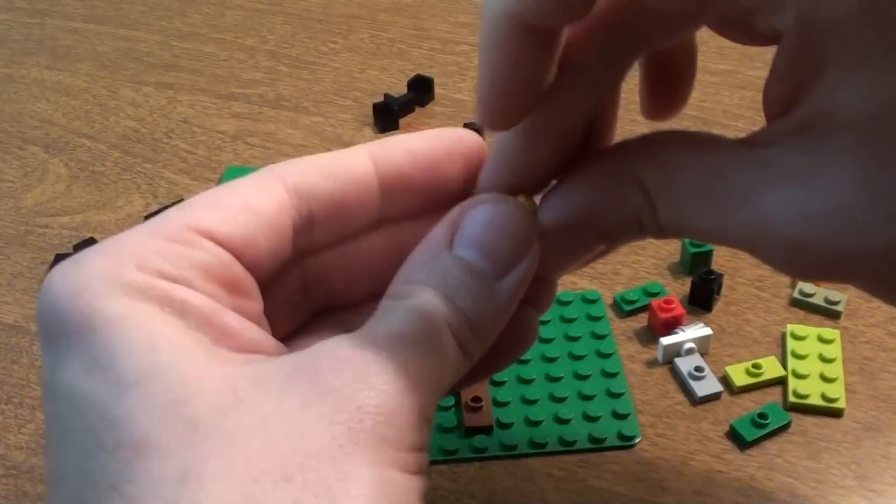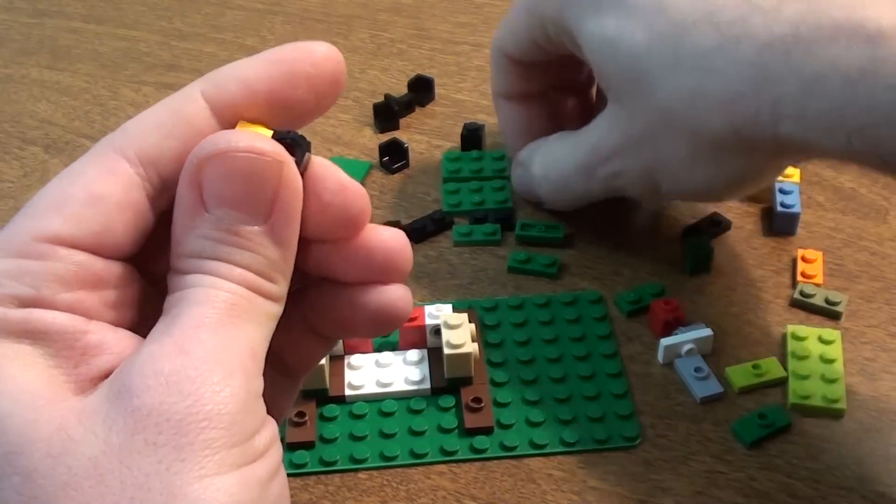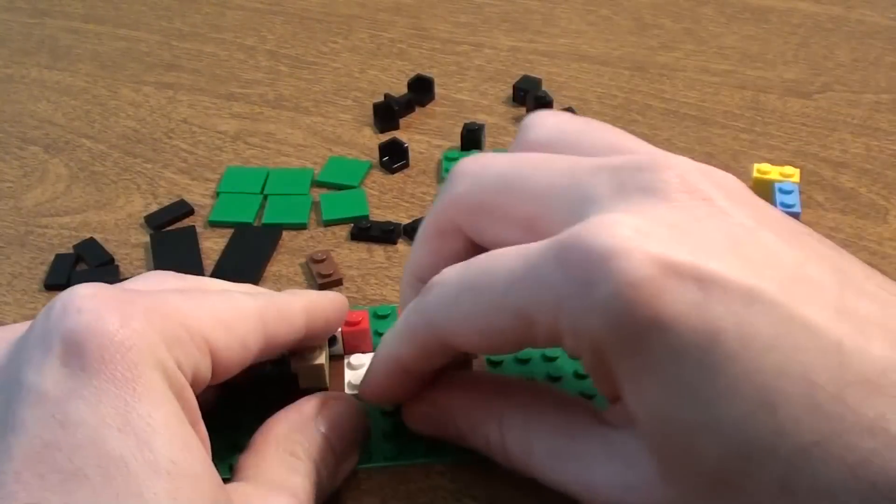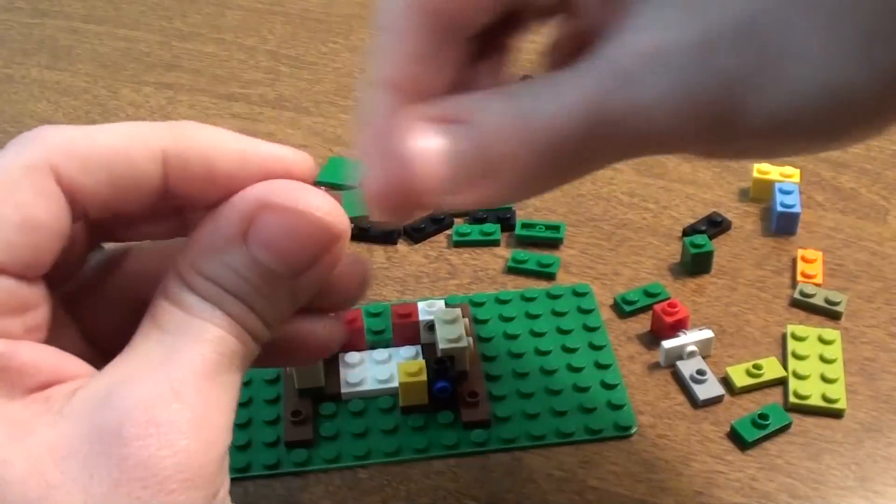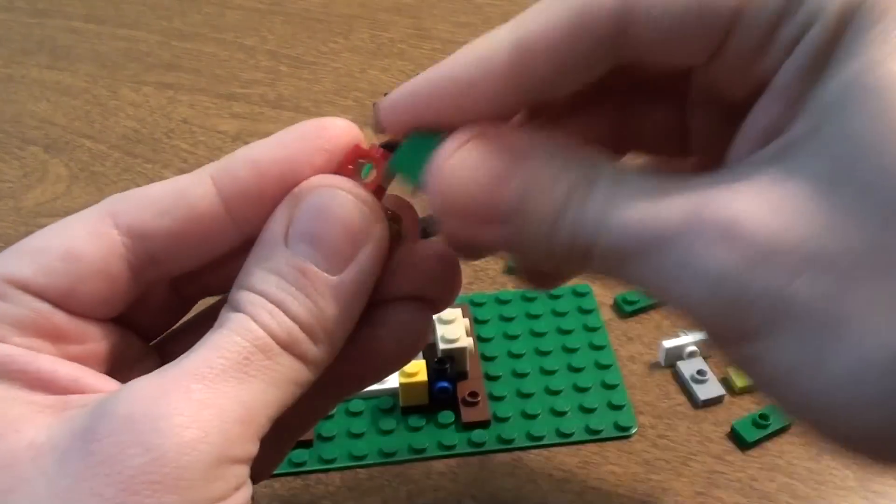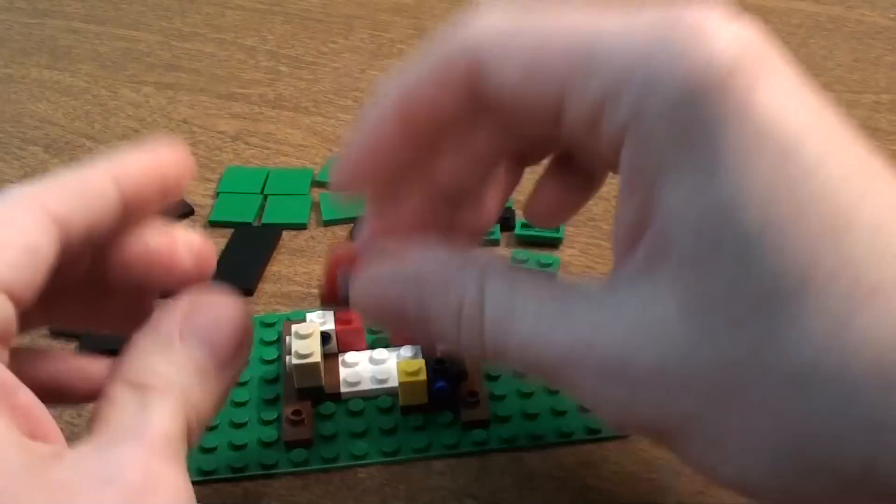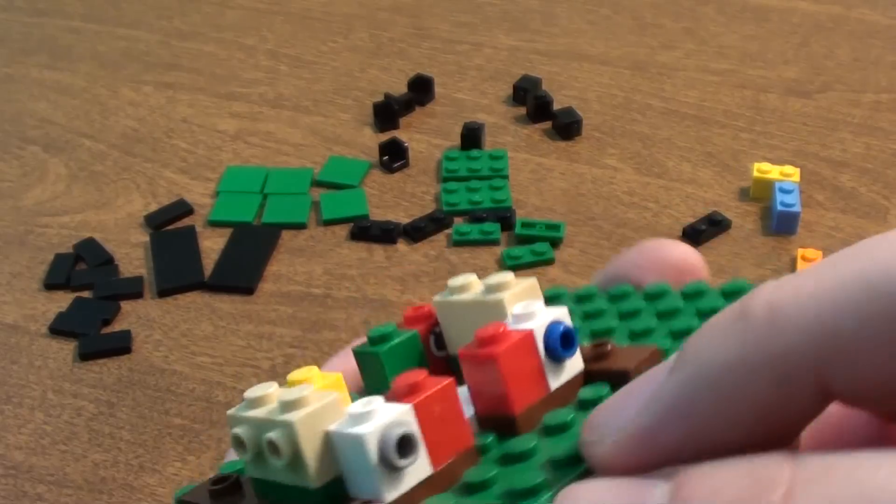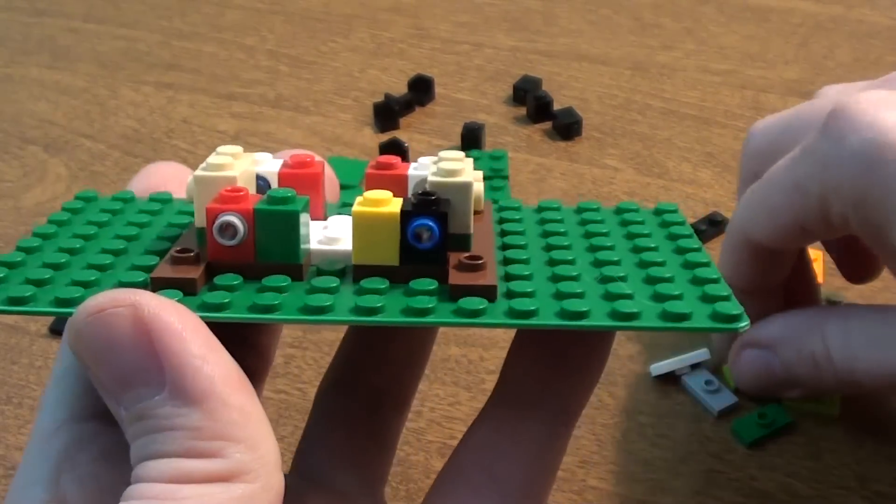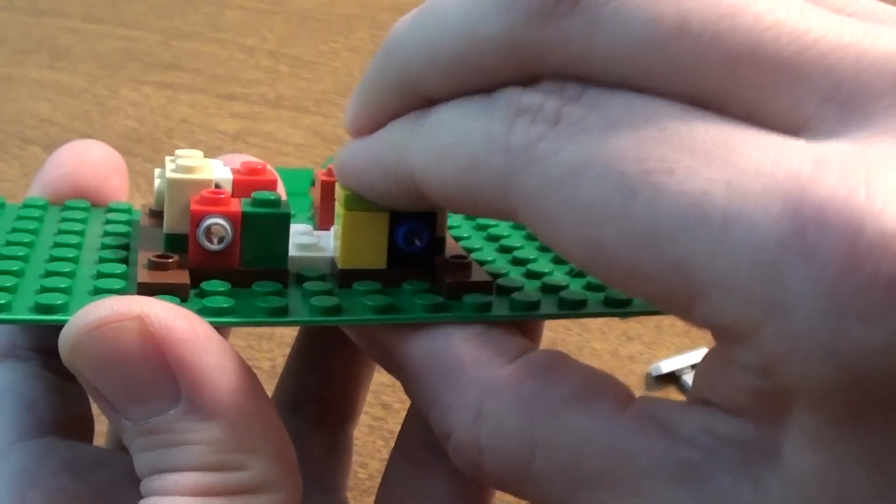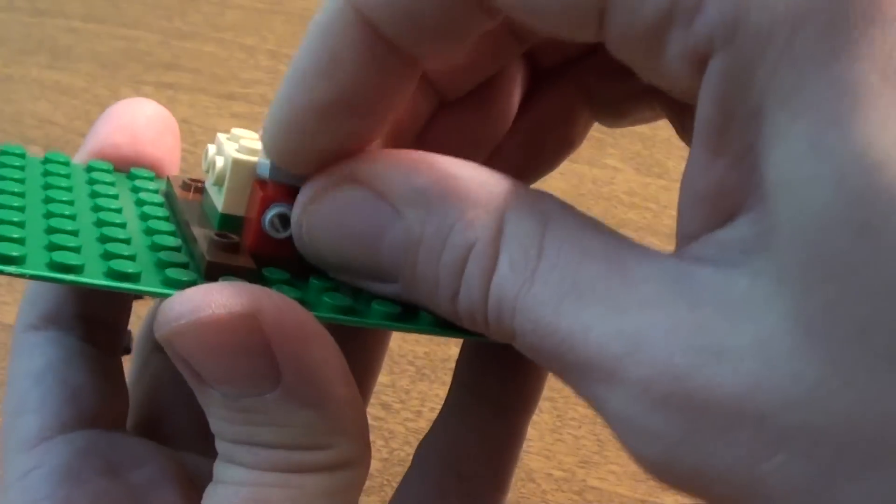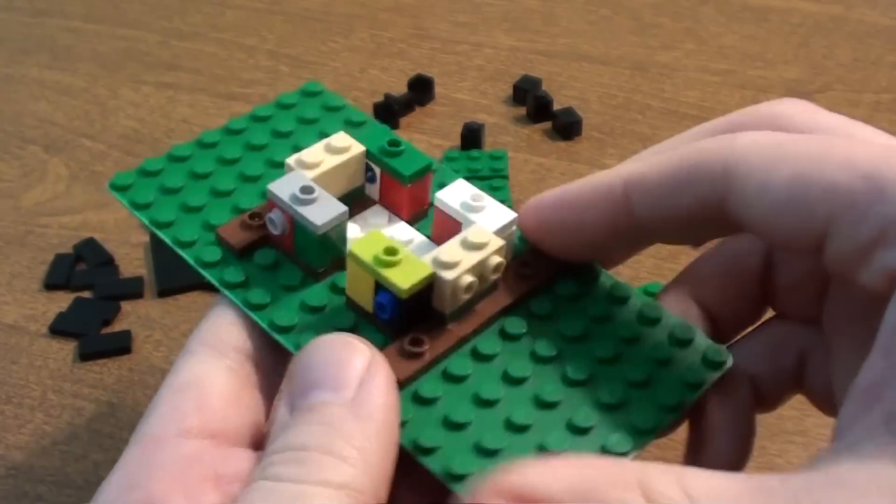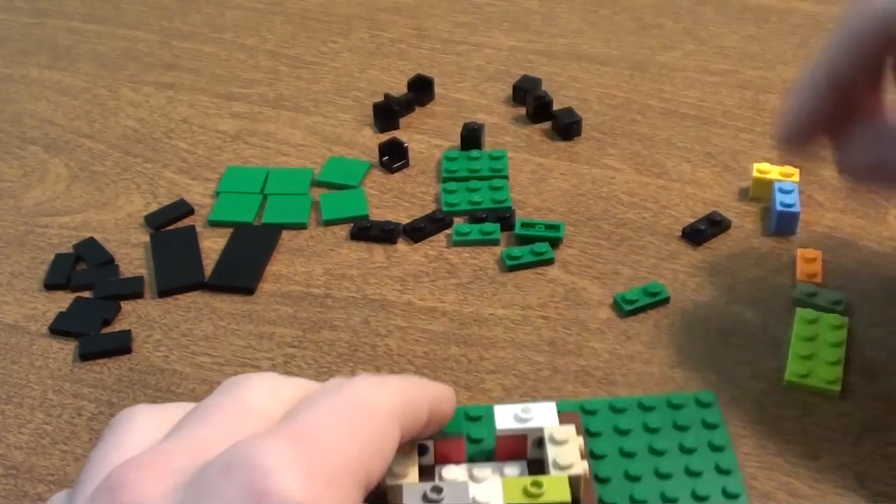This one's going to be on the right side. Keep the peg on the outside, and we turn it around. A brown plate on the bottom, and just like that. Then we're going to throw these jumpers on top of there. It looks just like that.